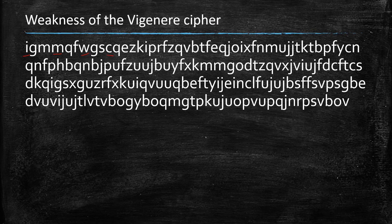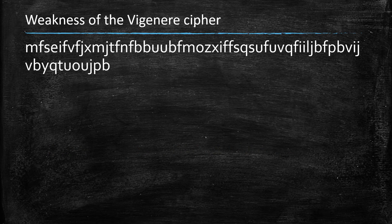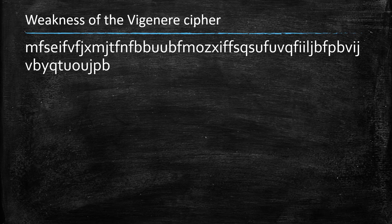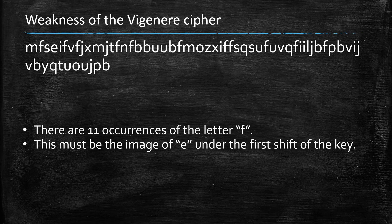So this is my ciphertext. Then I'm going to take every third letter of that ciphertext—one, two, three, one, two, three, one, two, three, one—and so on and so forth. That gives me this. And I know for a fact they're all shifted by the same amount, and I noticed 11 occurrences of the letter F.